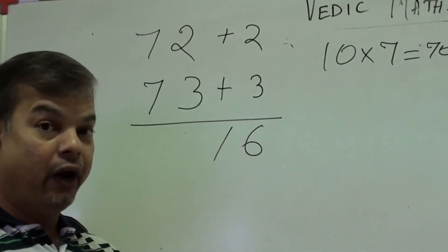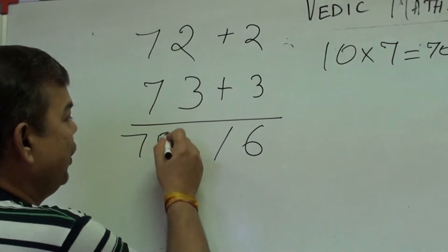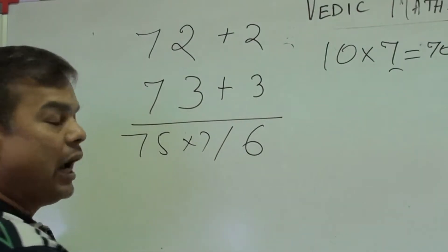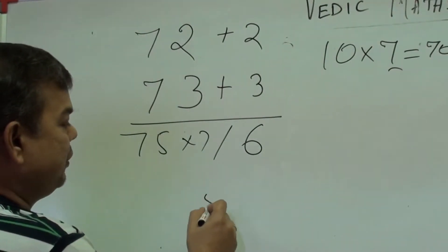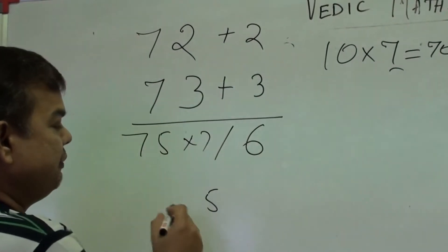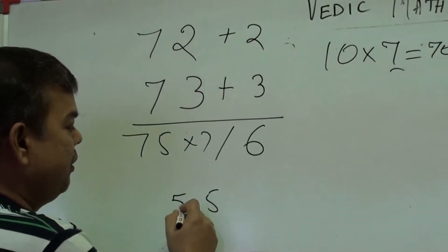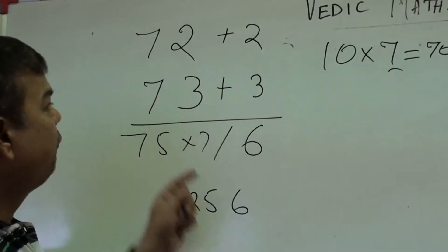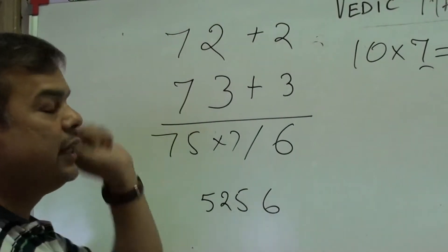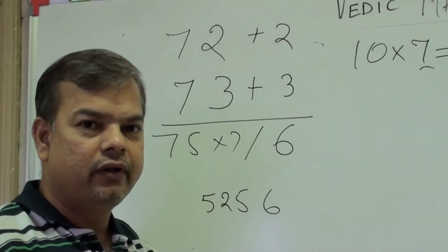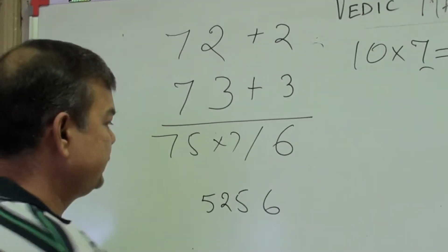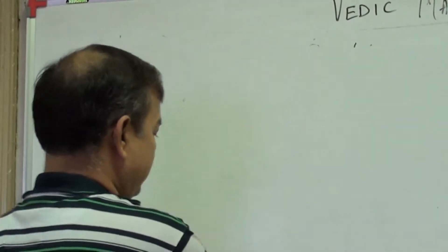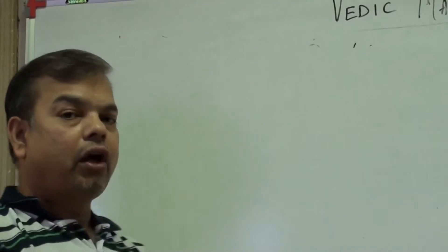Cross addition: 73 + 2 = 75. But once you get 75, you multiply by the multiplier 7. So: 5 × 7 = 35, write 5 carry 3; 7 × 7 = 49 + 3 = 52. This gives 525, and with the 6, the answer for 72 × 73 is 5256.